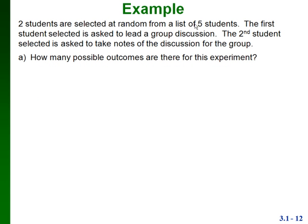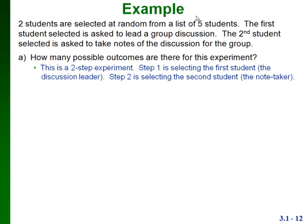Here's an example of a multiple step experiment. Let's say that we have five students and we're going to select two students at random. The first student selected is going to be asked to lead a group discussion, and the second student selected is going to be asked to take notes. So we have two different students selected with two different jobs. This is a two-step experiment: selecting the first student is step one, and selecting the second student is step two.